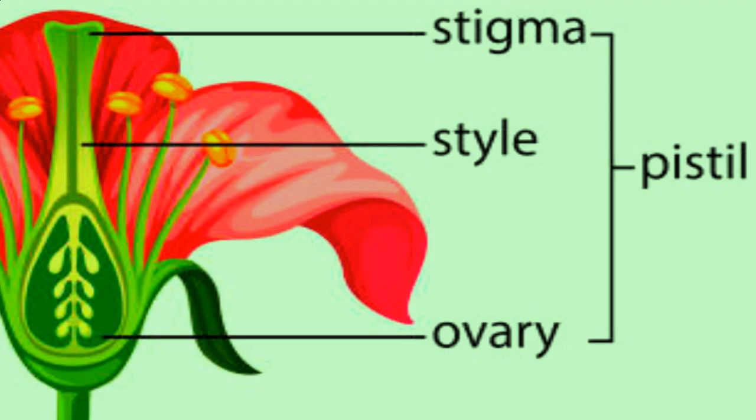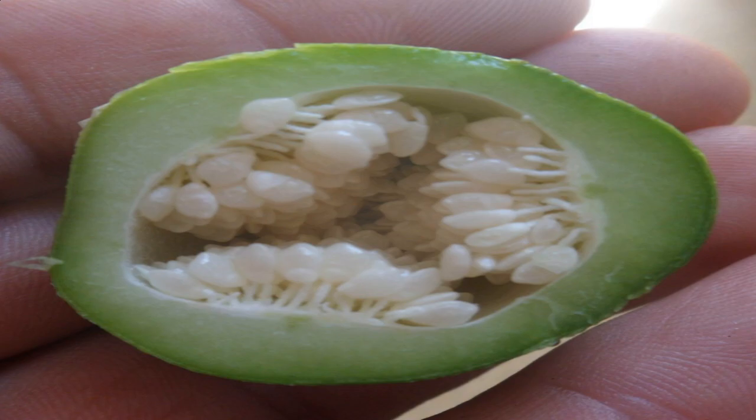The ovary is the swollen base. Inside the ovary is the cavity of the ovary, which holds the placenta. From the placenta arise one or more ovules.